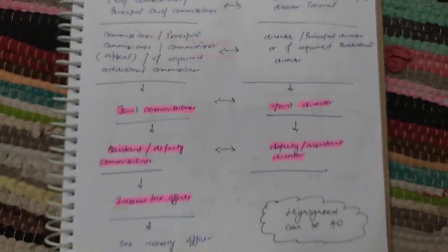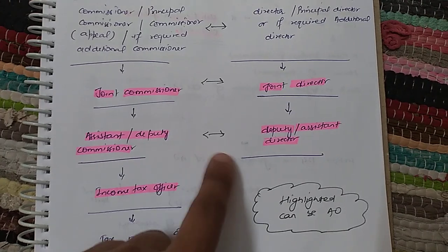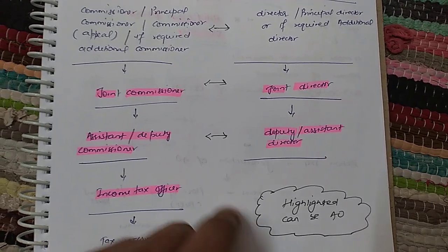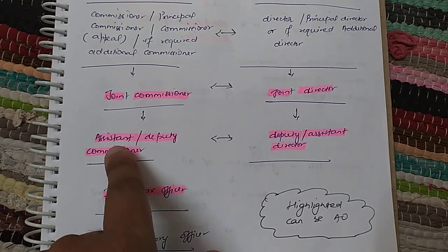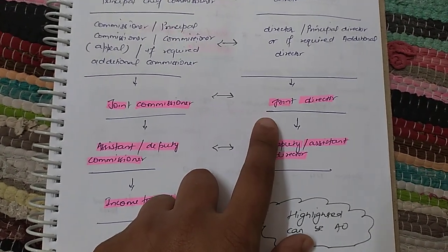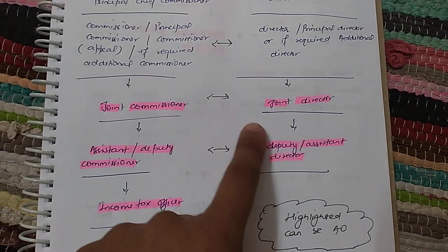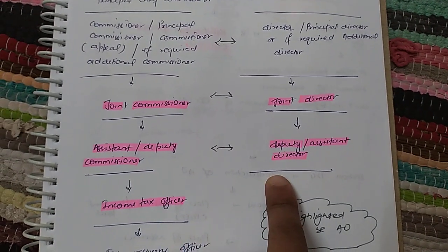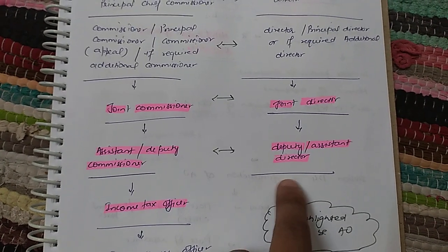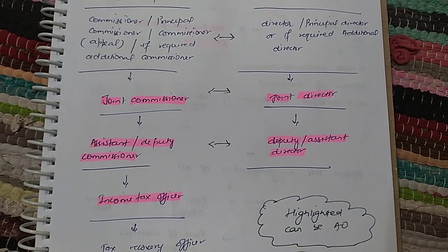The important point to note is that only the highlighted officers can assess your income tax return — meaning only the highlighted ones can be your Assessing Officers (AO). In the Analysis Wing, these are the Joint Commissioner, Assistant Commissioner, Deputy Commissioner, and Income Tax Officer. Under the Investigation Wing, the Joint Director, Deputy Director, and Assistant Director can be your AO. Only these highlighted officers can be your Assessing Officers.